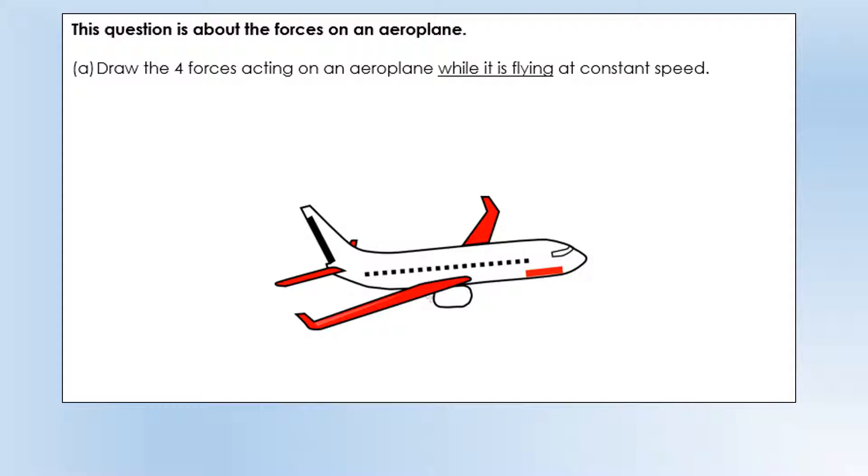So let's start off with forces. Draw the four forces acting on an aeroplane while it's flying at constant speed. So for me, this is the key to this question, the fact it's at constant speed, because that tells you some key things.